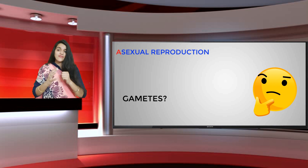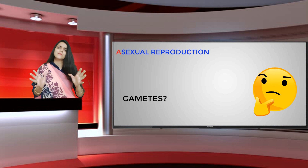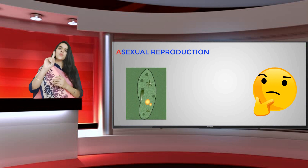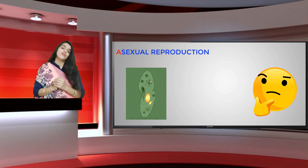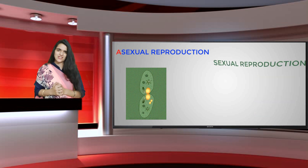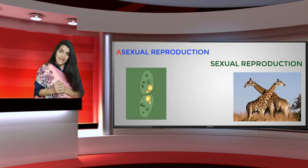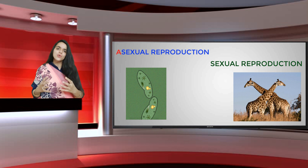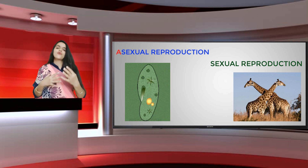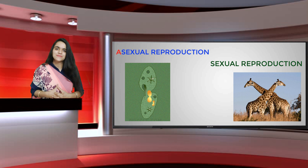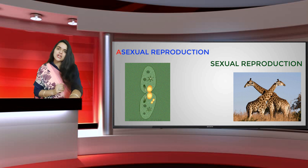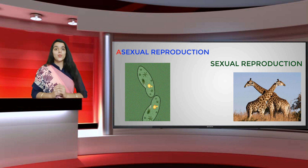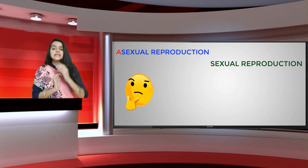Asexual reproduction is a very simple process because only one parent is involved. Whereas sexual reproduction is bi-parental — meaning two parents from opposite sexes are involved. That is why sexual reproduction is more complex compared to asexual reproduction.